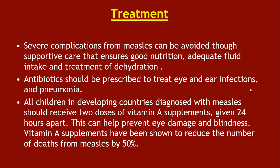Severe complications from measles can be avoided through supportive care that ensures good nutrition, adequate fluid intake, and treatment of dehydration. Antibiotics should be prescribed to treat eye and ear infections and pneumonia. All children in developing countries diagnosed with measles should receive two doses of vitamin A supplements given 24 hours apart. This can help prevent eye damage and blindness, and vitamin A supplementation has been shown to reduce the number of deaths from measles by about 50 percent.